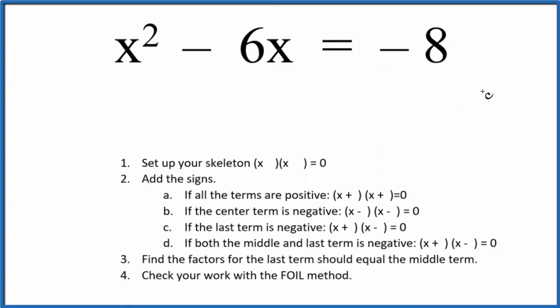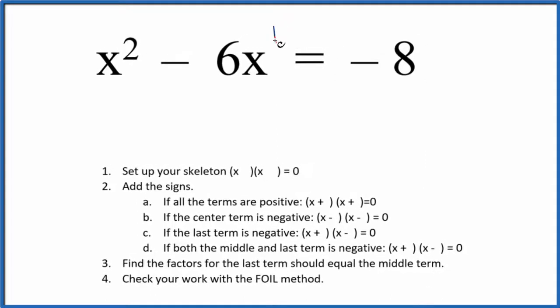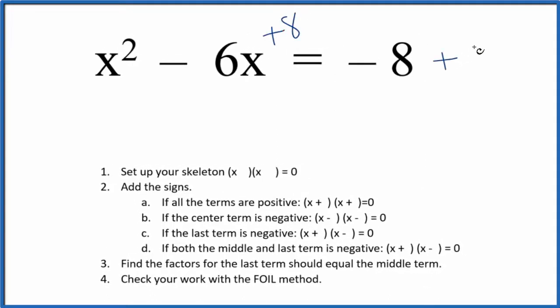The trick really is we need to get it in a format that we're more familiar with, where we'd have everything on this side equals 0. So let's add 8 to both sides, because negative 8 and positive 8, that's 0. Then we end up with x squared minus 6x plus 8 equals 0.